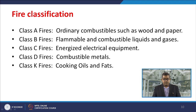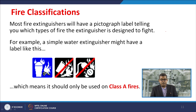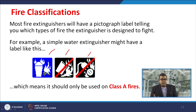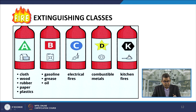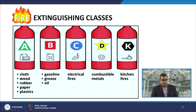Most fire extinguishers will have a pictograph label telling you which type of fire the extinguisher is designed to fight. A water extinguisher might have a label indicating it should only be used on Class A fires. You may see different types of fire extinguishers in different places you visit or industries you work in. Class A covers cloth, wood, rubber, paper, and plastic; Class B covers gasoline, grease, and oil; Class C covers electrical fires; Class D covers combustible metals; and Class K covers kitchen fires.